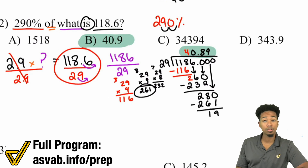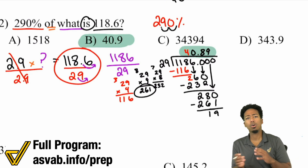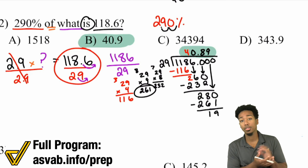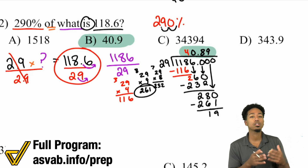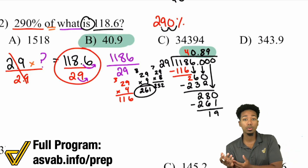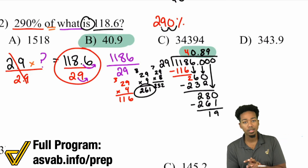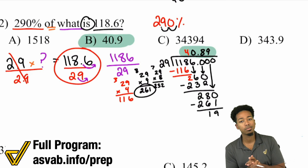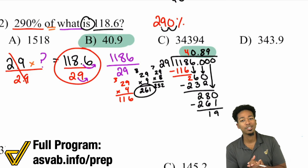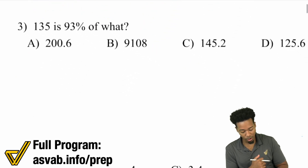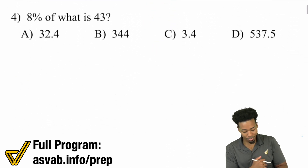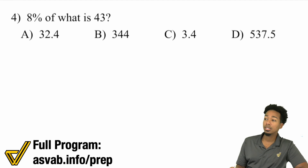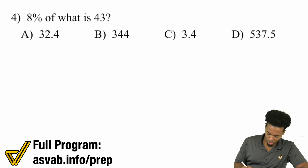And there's your answer — 40.9. You don't always have to go all the way through every digit. All you need to do is make sure you know the procedure: if you want to find the original number, divide that result by the percent to go backwards to the original number. Let's go through a couple more examples.